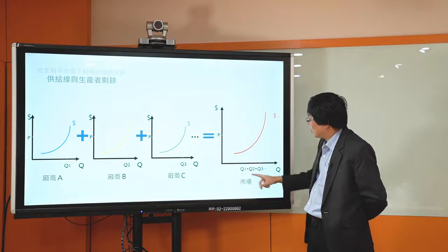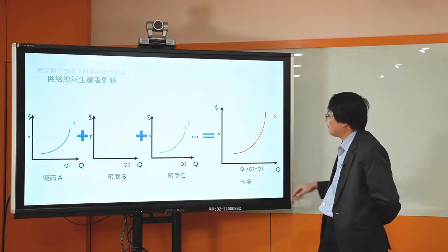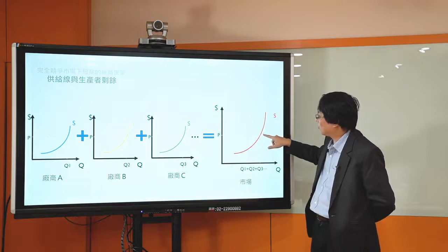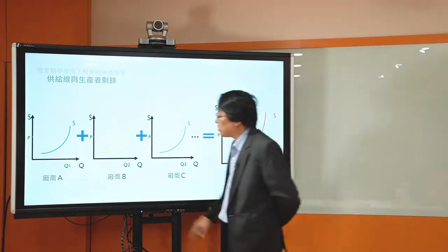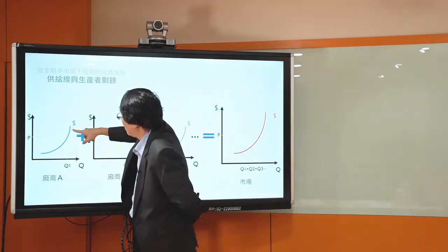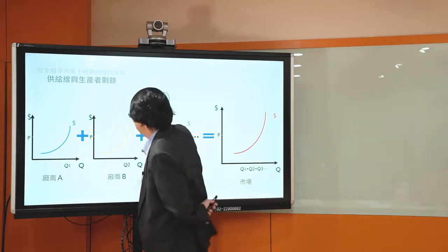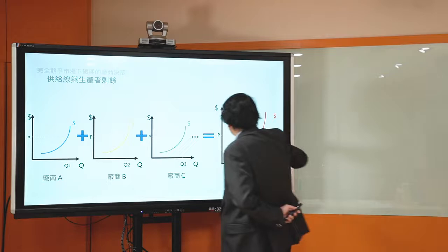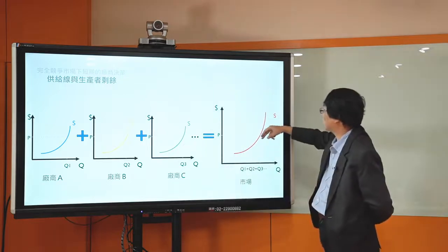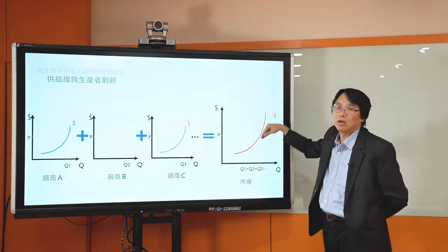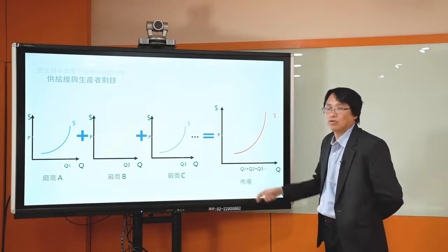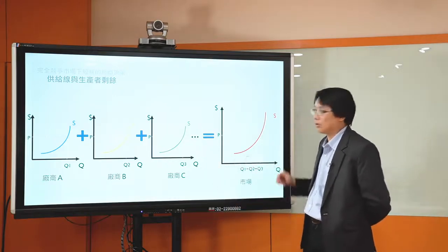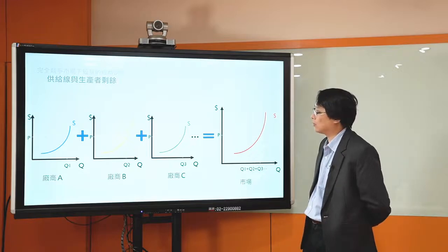A廠商的供給線是正斜率的，B廠商也是如此，C廠商也是如此。所以當價格是P的時候，A廠商願意供應Q1，B廠商願意供應Q2，C廠商願意供應Q3。整個市場總產量就是把所有廠商供應量橫向加總起來。如果價格變高了，A、B、C各廠商供應量都會變多，整個市場的供應量也會增加，這就是市場供給線。